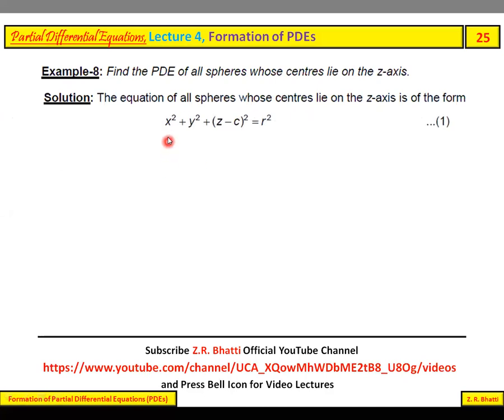The equation of all spheres whose centers lie on the z-axis is of the form x² + y² + (z - c)² = r². Here the center lies on the z-axis, so x and y coordinates are zero.